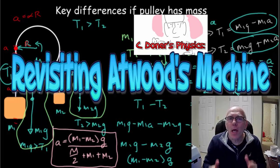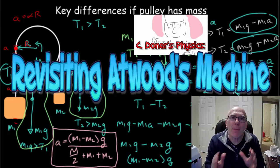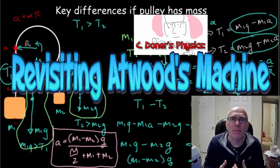We're going to revisit the Atwood's machine, but this time instead of assuming it's a massless pulley, we're going to give the pulley some mass.